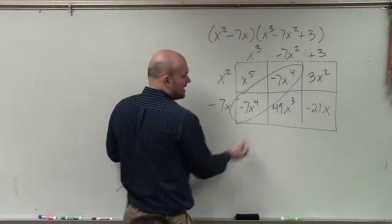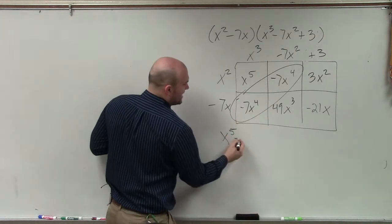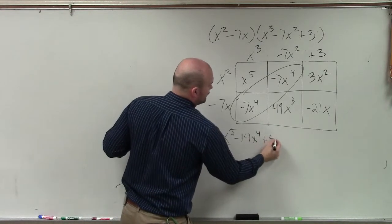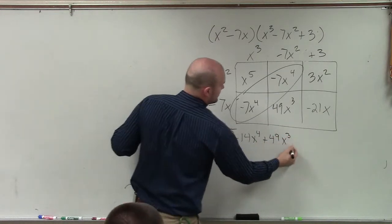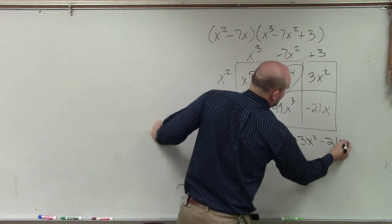So now I just write everything in descending order. x to the fifth. This becomes negative 14x to the fourth plus 49x cubed plus 3x squared minus 21x.